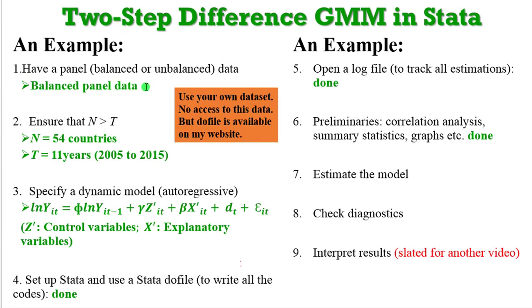In this example I have a balanced panel with 54 countries across 11 years and I have specified a dynamic model, which you can see on the screen. I have set up Stata and my do file is ready with all the codes written. I have my log file open to track all estimations. All I'm going to do in this tutorial is show you how to estimate the model and run several simulations and check diagnostics as you progress.